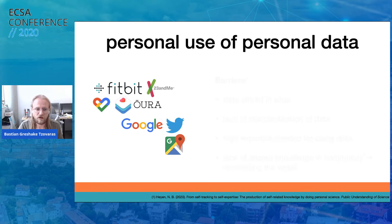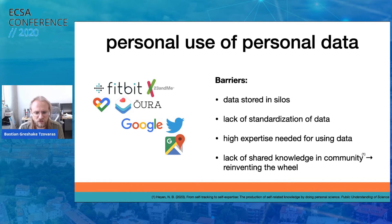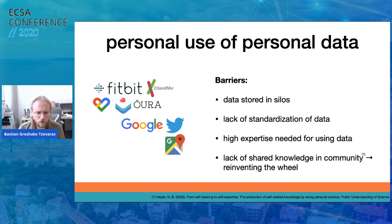There's a lot of data that can be used for citizen science, but using this data in citizen science is still pretty hard. The top reason is that this data is stored in silos — in all different company databases, and access to it is not simple. It also often has a huge lack of standardization: wearable device data from Fitbit might be very different from your Apple Watch. And last but not least, there is the high expertise needed for using the data — you need to be comfortable using data science methodologies. All of this together leads to a lack of shared knowledge, with people reinventing the wheel again and again.